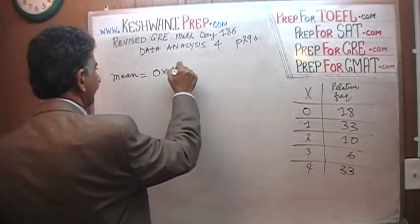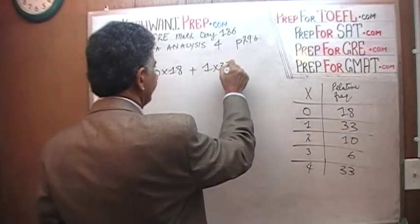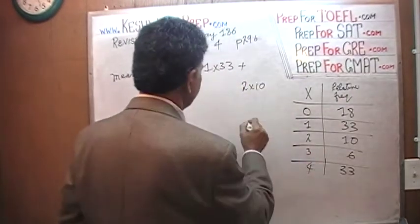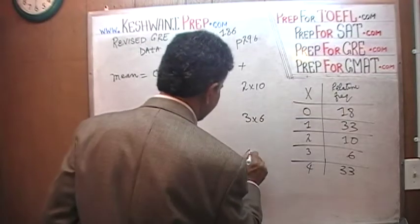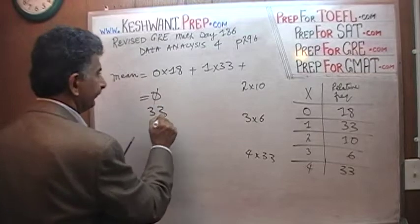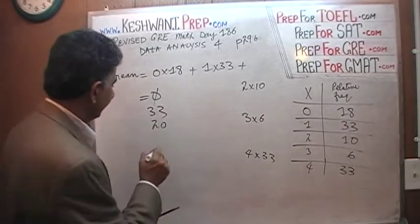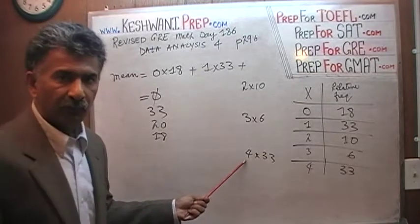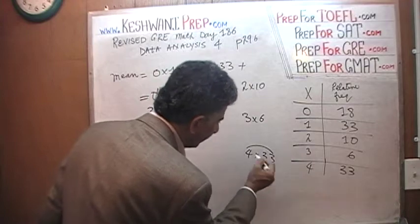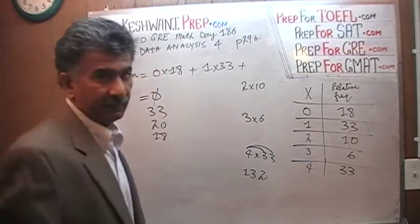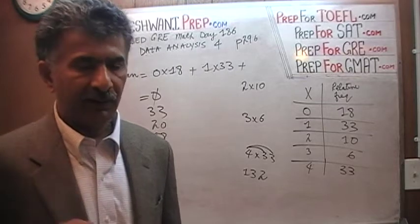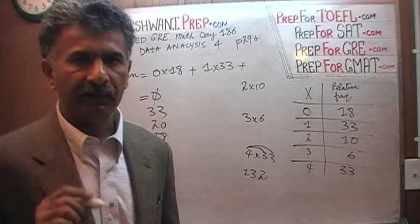0 times 18, plus 1 times 33, plus 2 times 10, plus 3 times 6, and 4 times 33. So: 0 times 18 is 0; 1 times 33 is 33; 2 times 10 is 20; 3 times 6 is 18; 4 times 33 — 4 times 30 is 120, and 4 times 3 is 12, so 120 plus 12 is 132. We get the same answer either way.